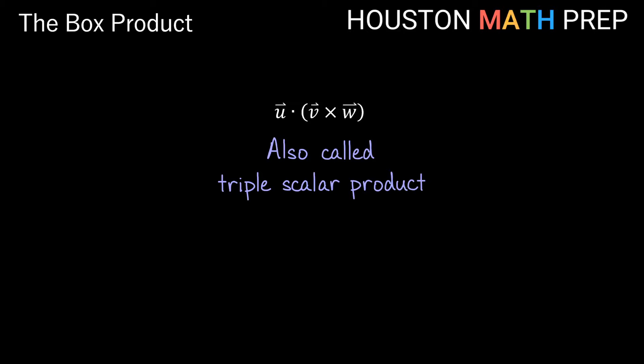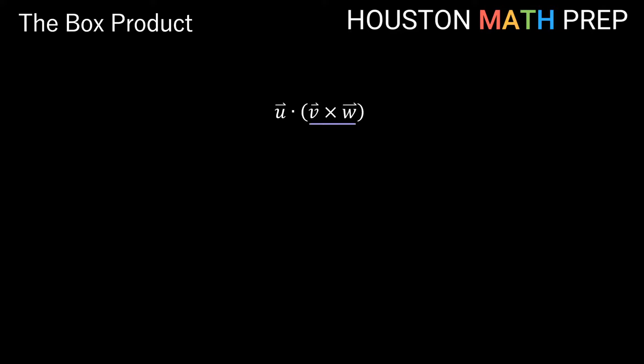You can see we've got these parentheses over here on the right — just like always, that's telling us to compute this part first. When we take the cross product of two vectors, that operation gives us a vector as an answer. After we do this cross product, we're then taking u dot whatever we got in the parentheses — in other words, a vector dot another vector. The dot product of two vectors gives us a scalar, so our answer is going to be a real number for this entire box product operation.